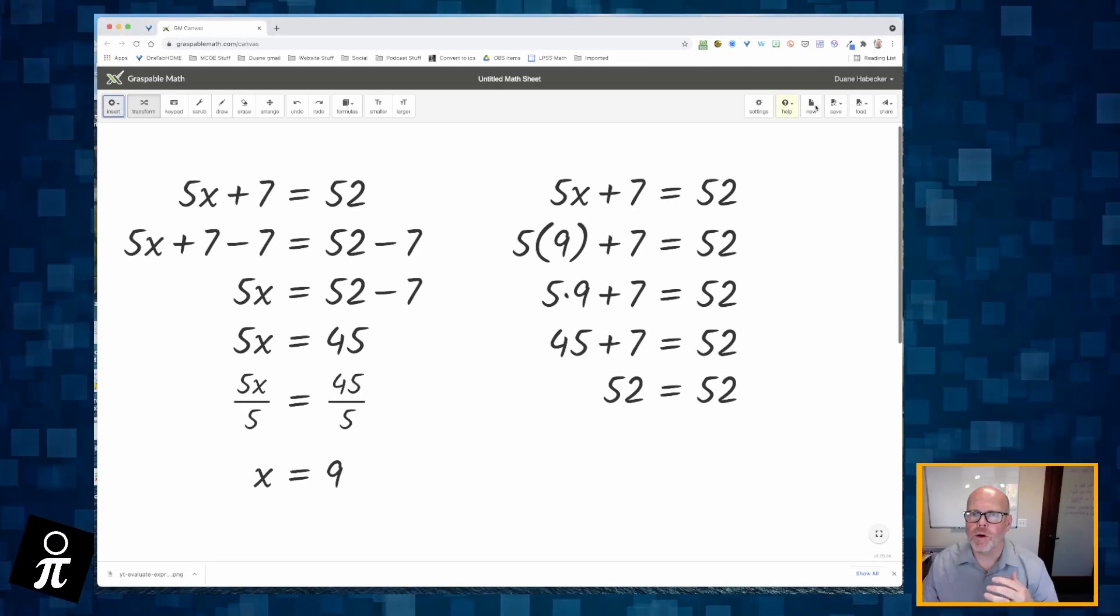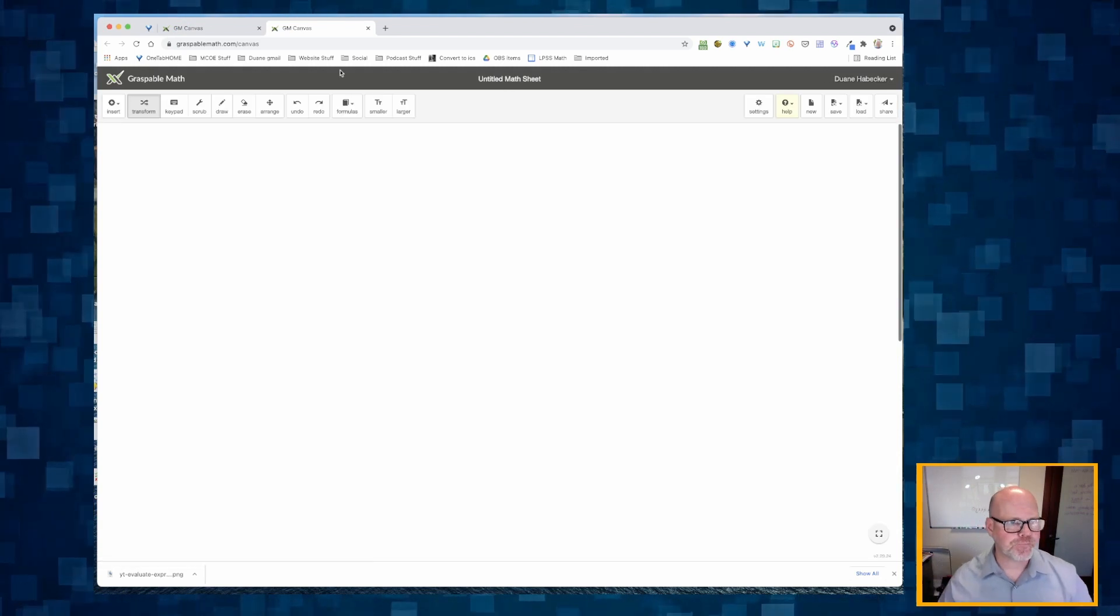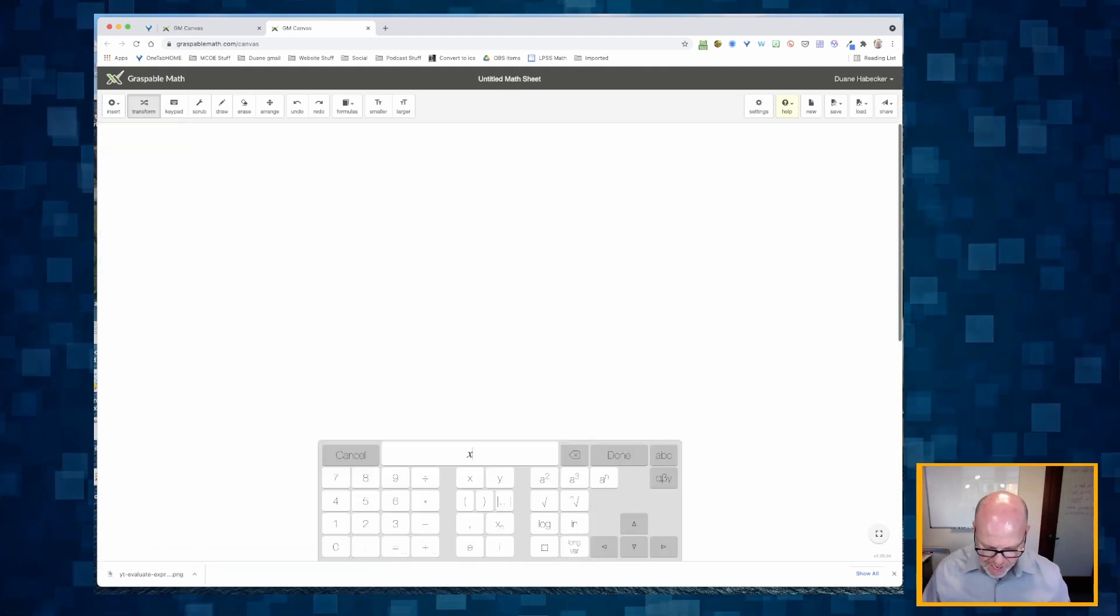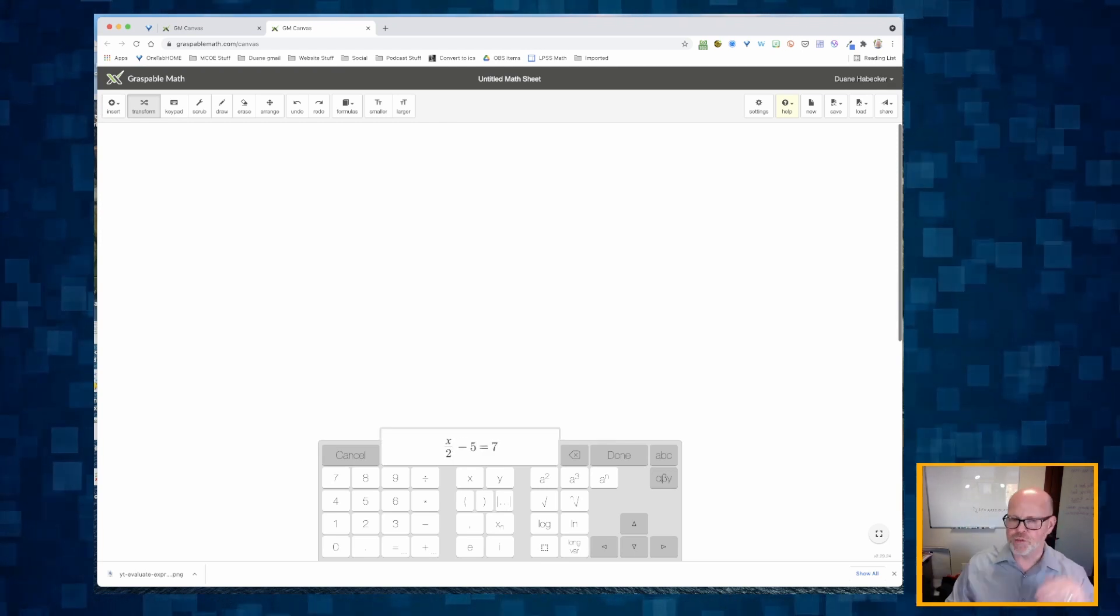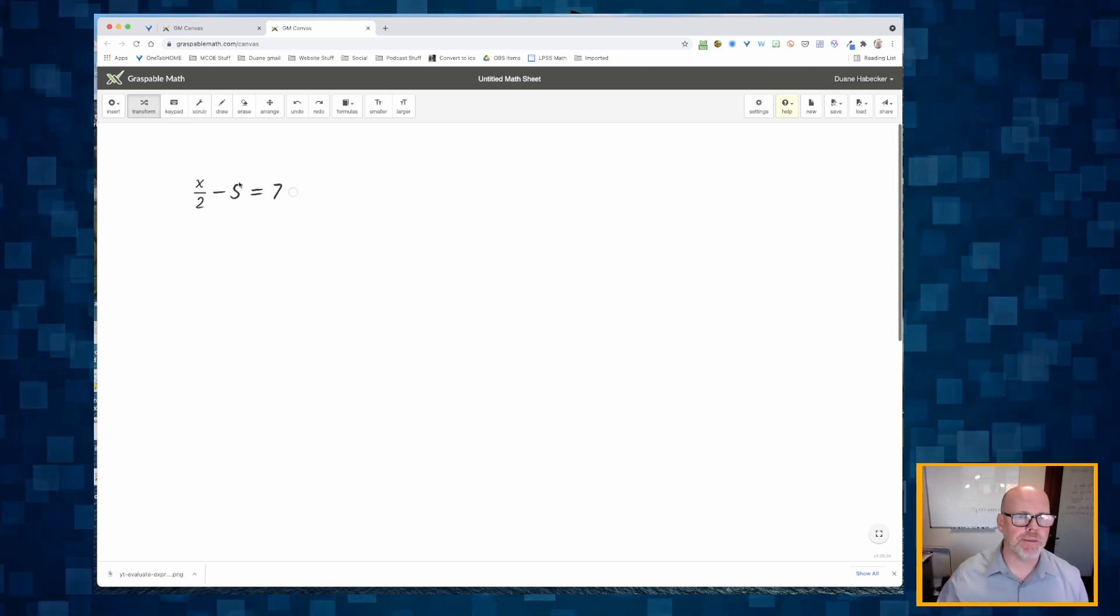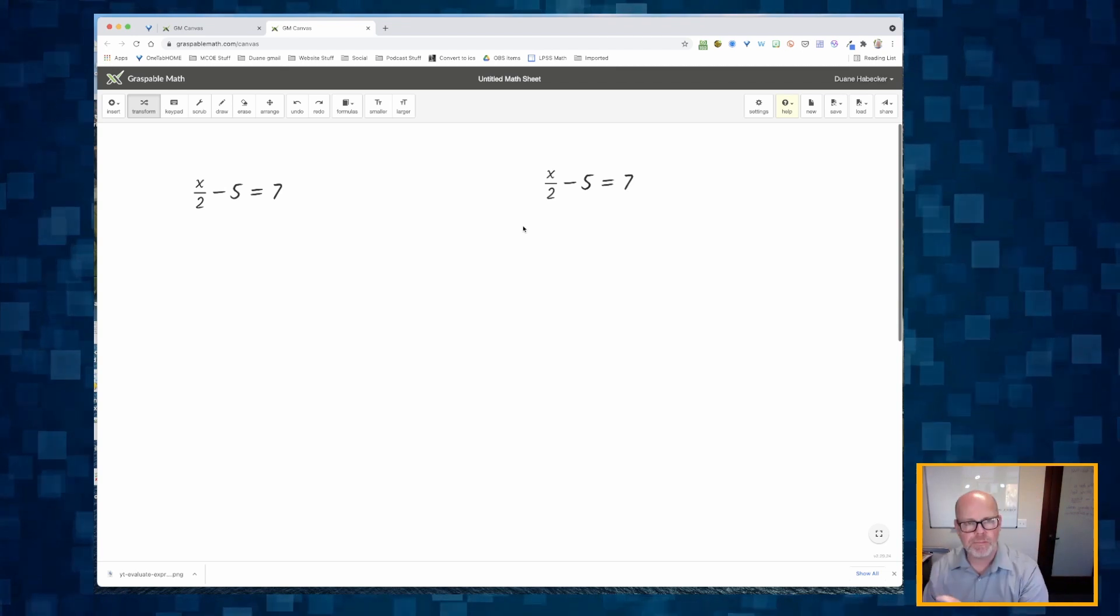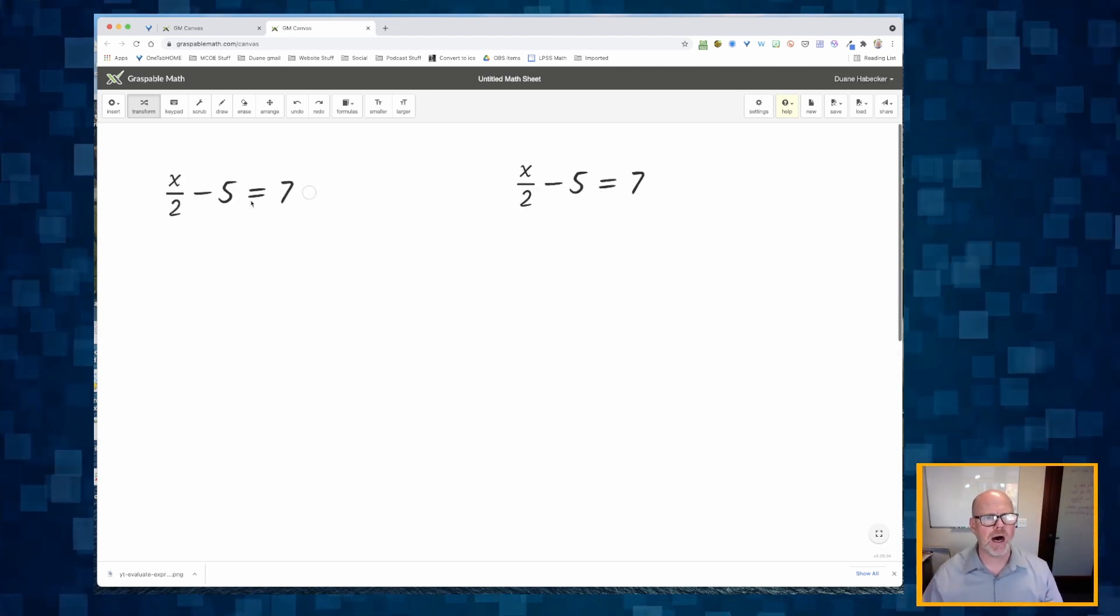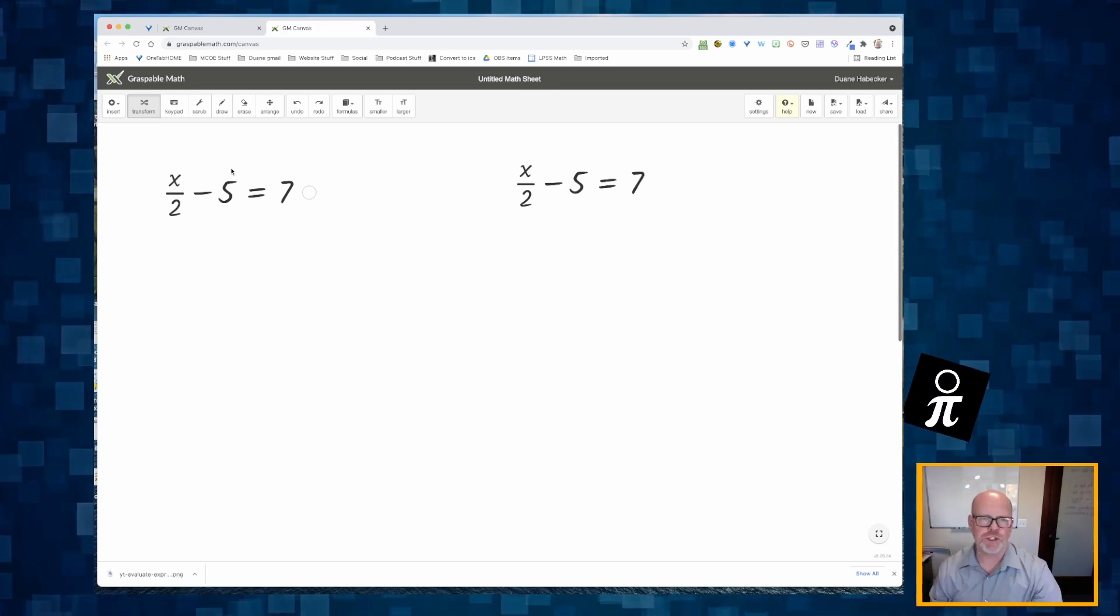Let's do one more problem before we wrap this baby up. So I'm going to click that new button. I'm going to click insert. I'm going to type in the expression. Let's do x divided by 2 minus 5 is equal to, let's say 7. So there's my expression. I'm going to hit done. And there we go. First thing I'm going to do is I'm going to make a copy of it because I know I'm going to evaluate my expression. Let's zoom in a little bit. And on the left, we're going to solve the equation on the left and then we're going to substitute it into the right.